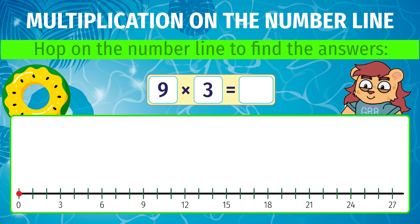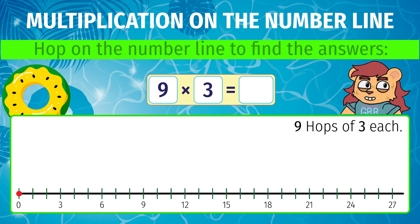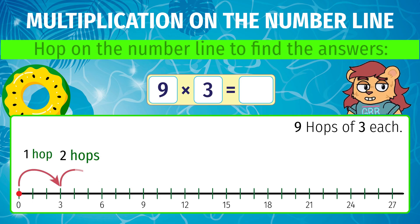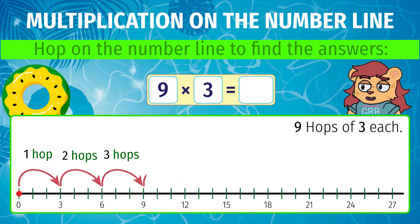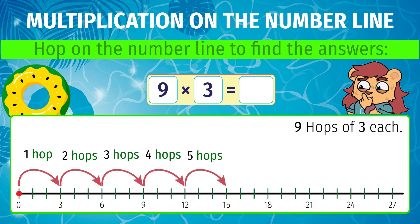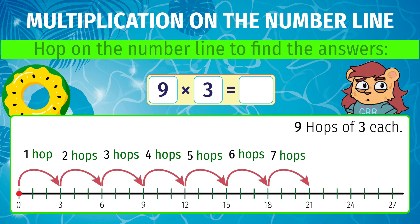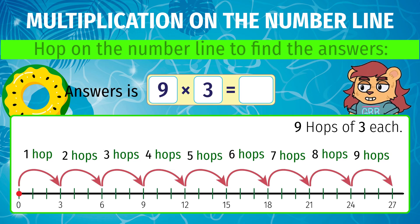9 into 3 means 9 hops of 3. We hop 9 times, each time by 3 numbers, starting at 0. We end up at 27. So, 9 into 3 equals 27.